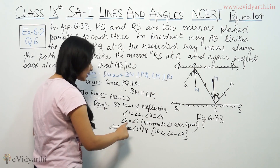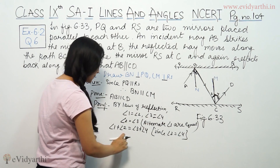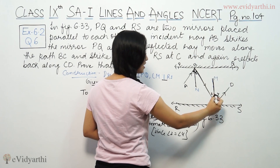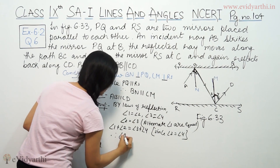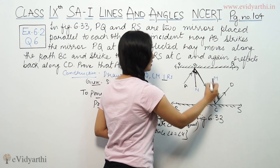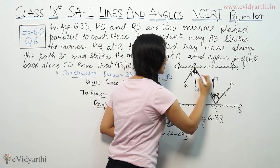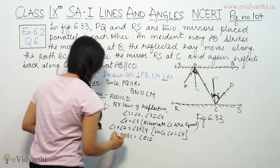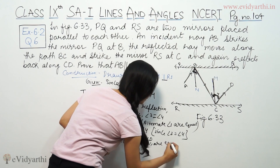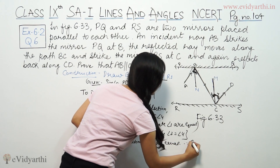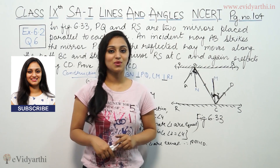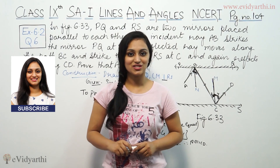Angle 2 is equal to angle 4, because angle 3 equals angle 4, so angle 2 equals angle 4. So if we add: angle 1 plus angle 2 equals angle ABC, and angle 3 plus angle 4 equals angle BCD. Therefore angle ABC equals angle BCD. Since alternate angles are equal, this is the Z angle, and therefore AB is parallel to CD. So this was question number 6 from exercise 6.2. Do watch the next video for more questions. Goodbye.